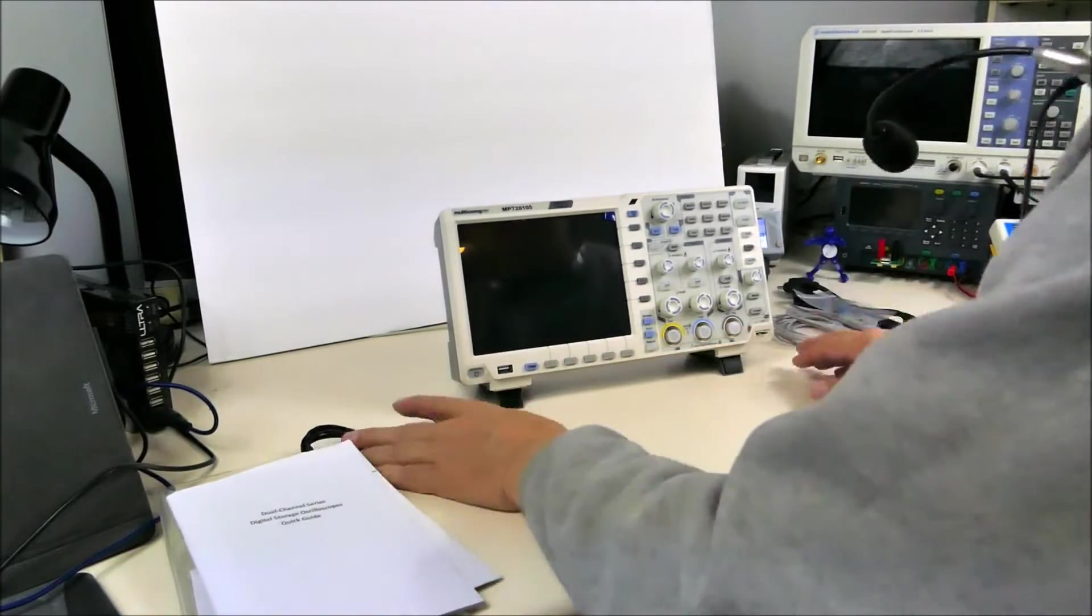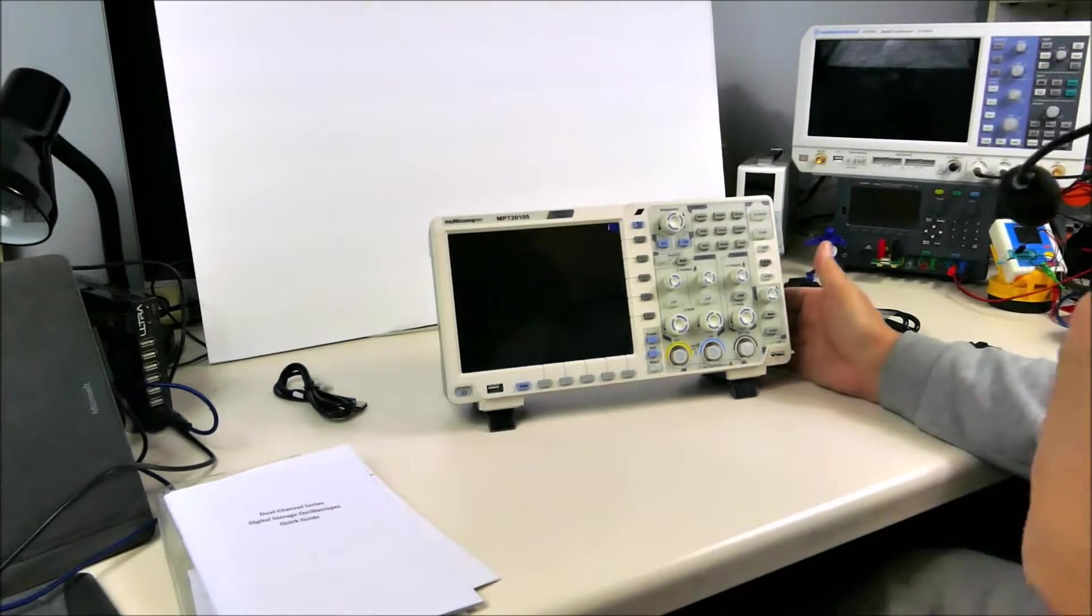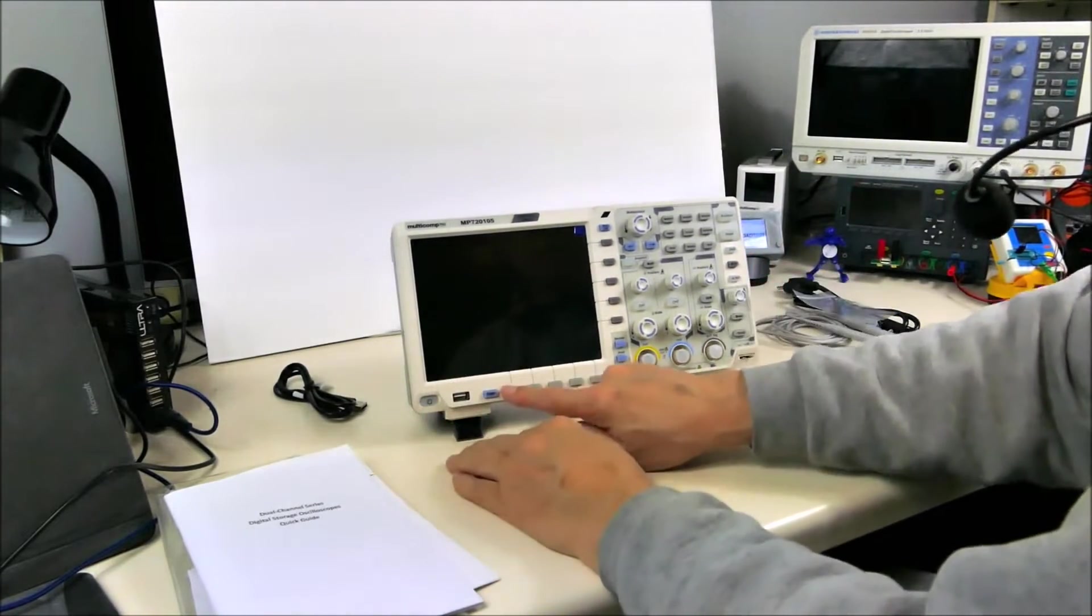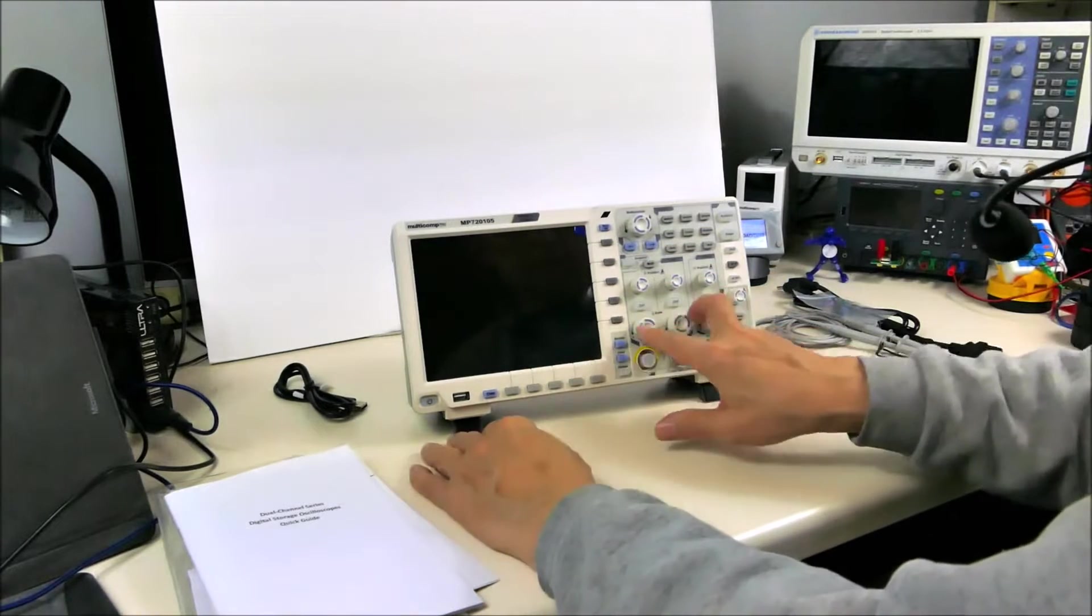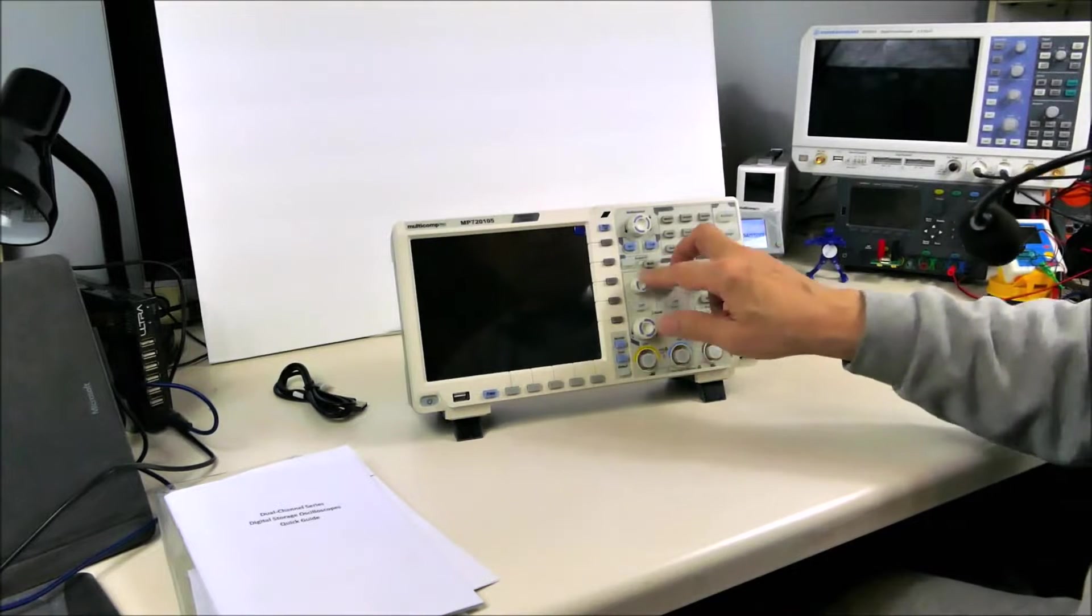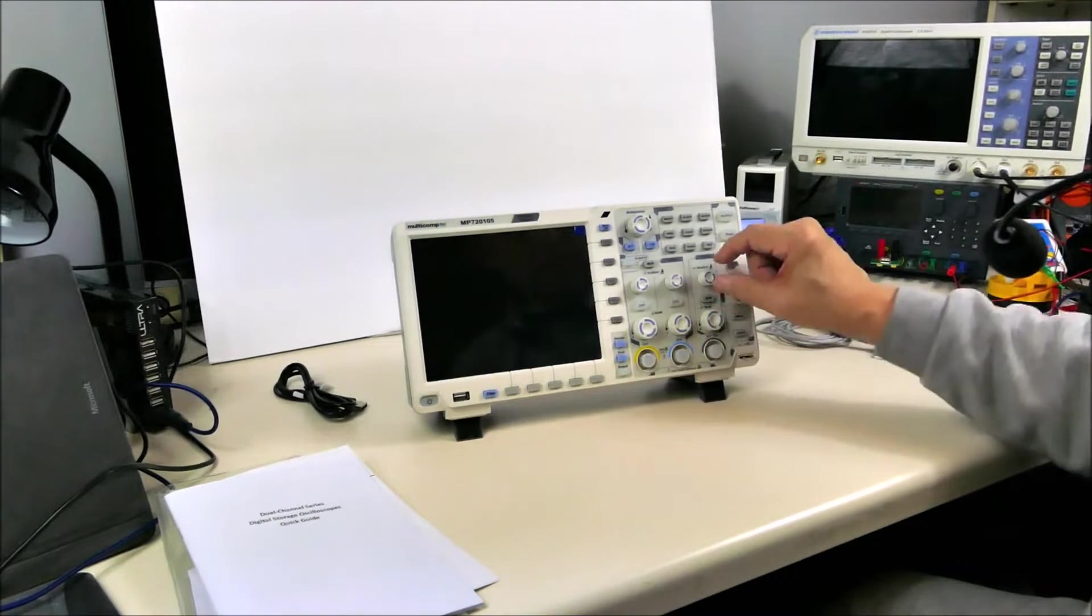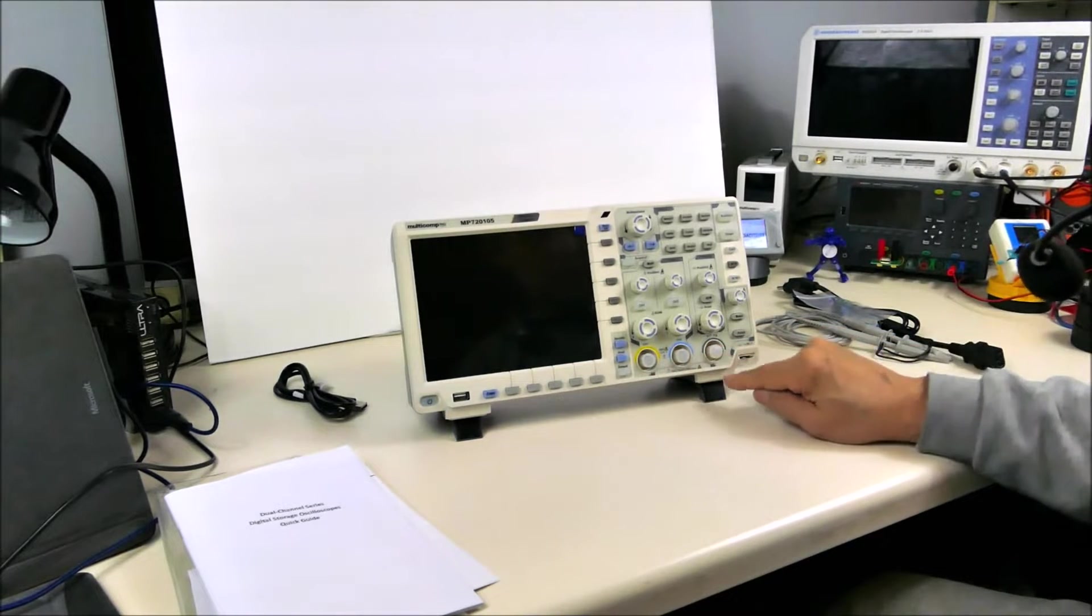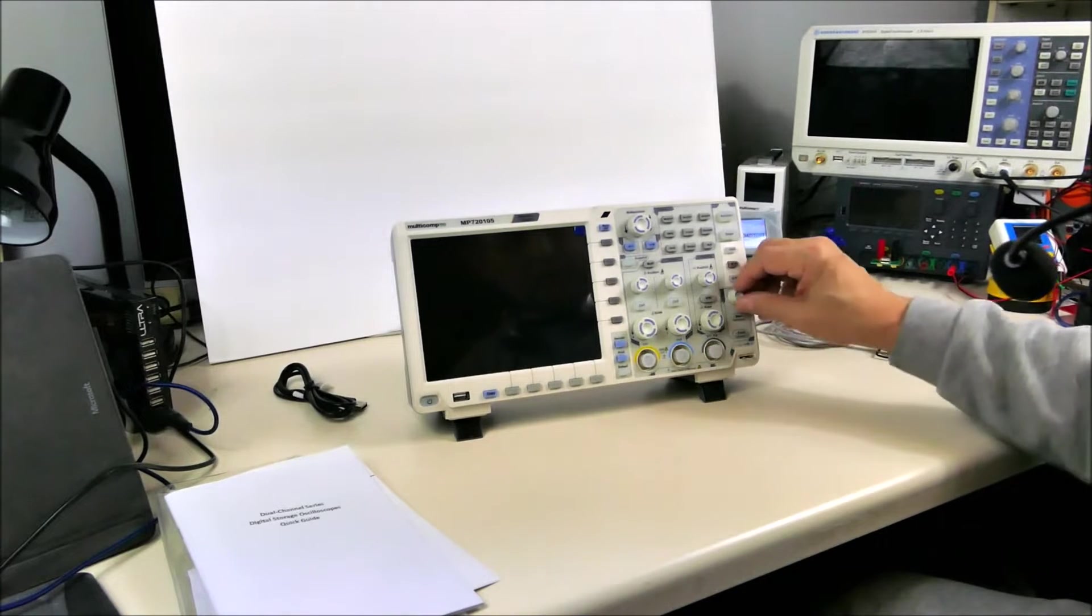Let's have a quick look at the features that we can see. This is a bit different from my other scopes, but we have two rows of context sensitive buttons. The two channels, position and scaling, horizontal scaling and position. Two channels, external trigger.